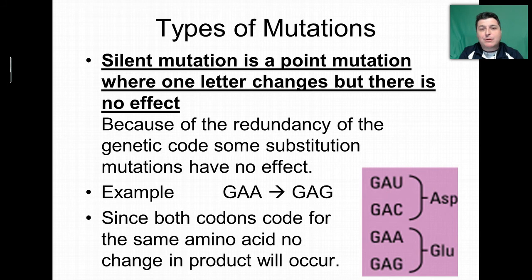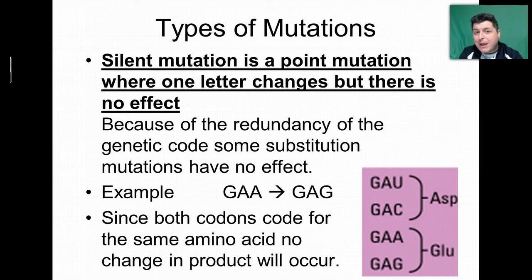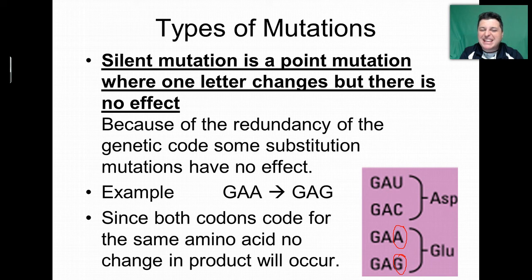Now, remember when we looked at the codon chart — there were a lot of built-in redundancies; there were multiple ways to code for the same amino acid. This is kind of a cool protection from some mutations. Because we have that redundancy, sometimes a single base change doesn't change the final product, and that mutation doesn't really have an effect at all. These kinds of mutations are called silent mutations. Since there are 64 ways to code for just 20 amino acids, sometimes that one change has no effect. For example, if we changed the A in GAA to a G — G-A-G — we're going to get the exact same amino acid. That's why it's called a silent mutation, because it happened and we didn't even know it.